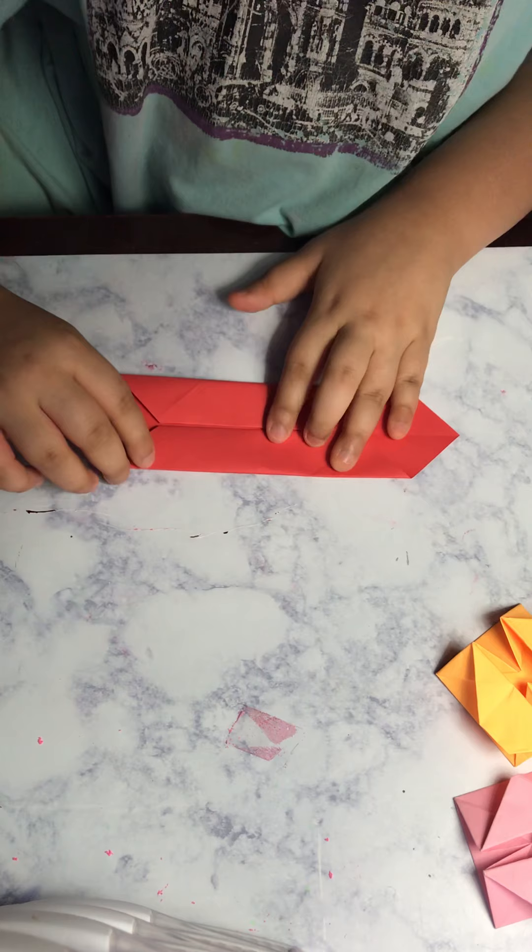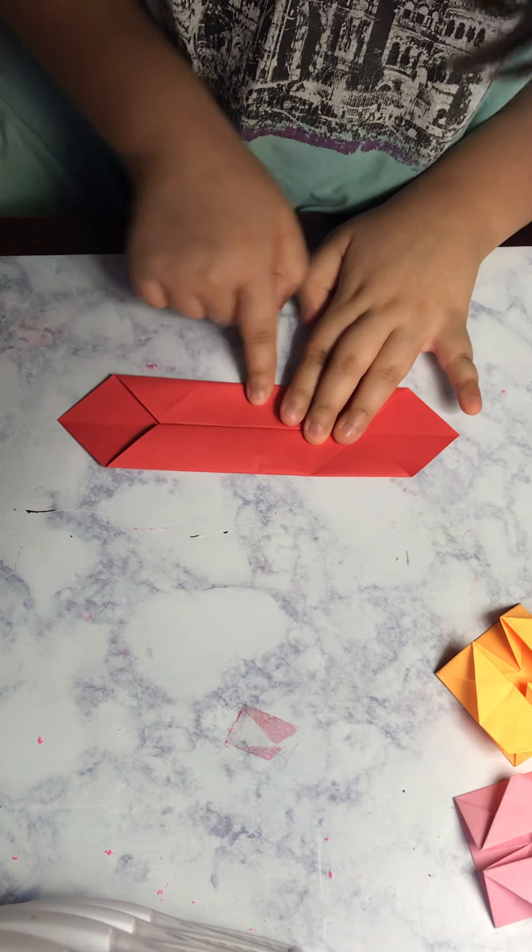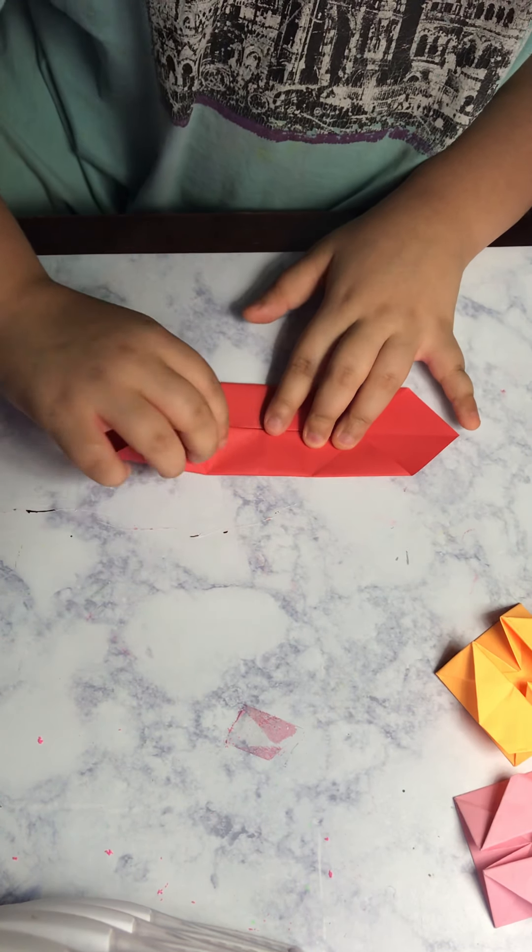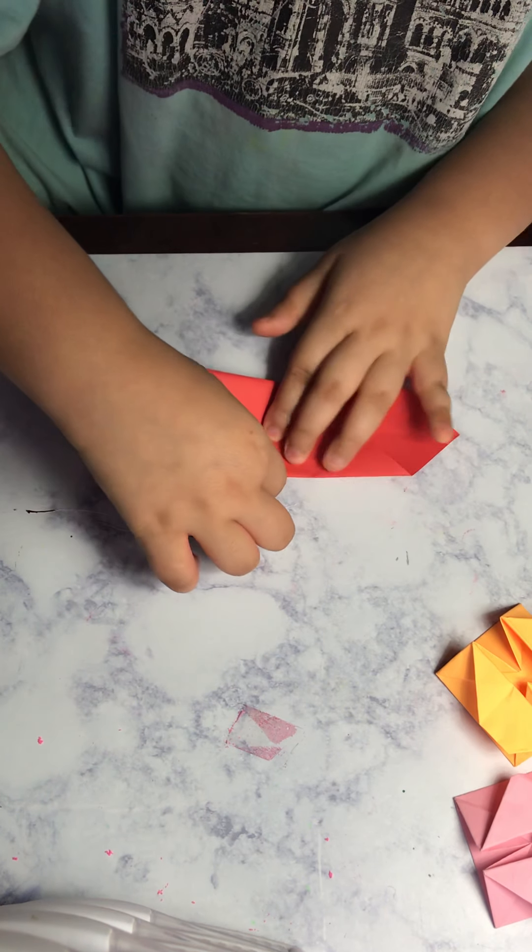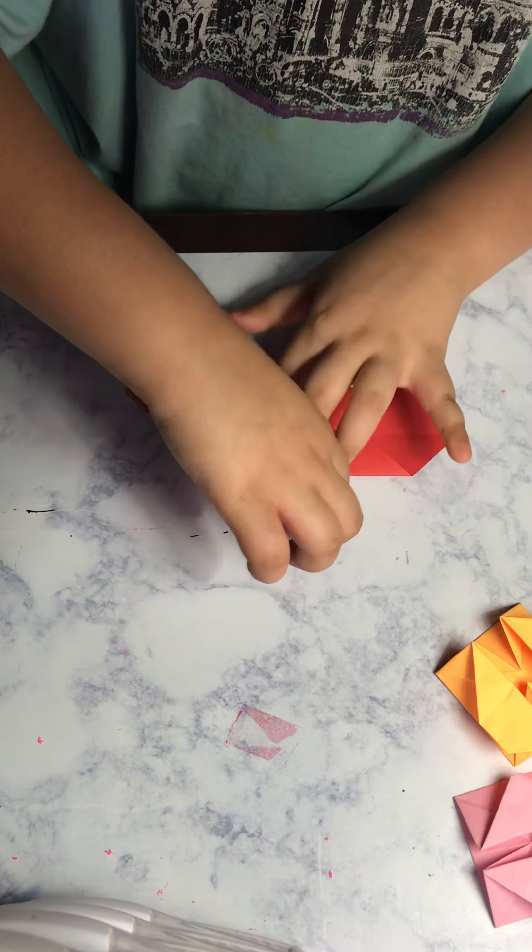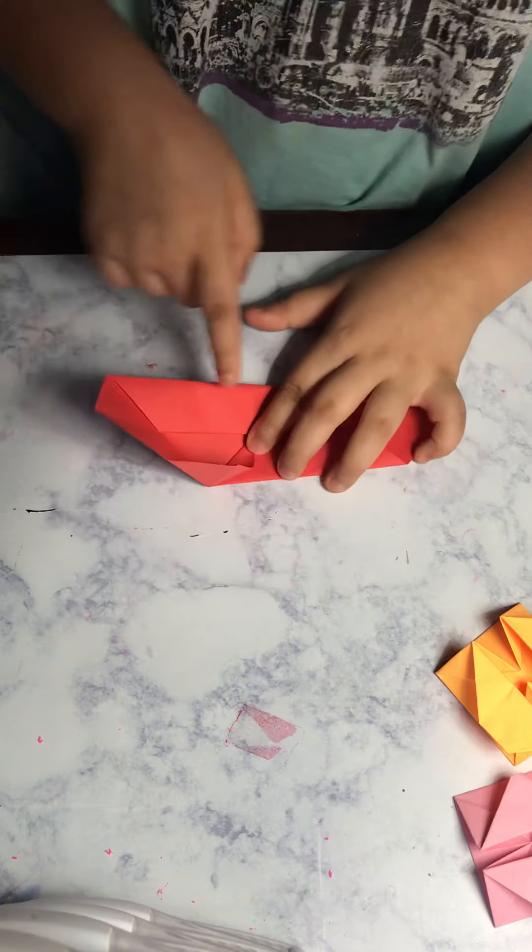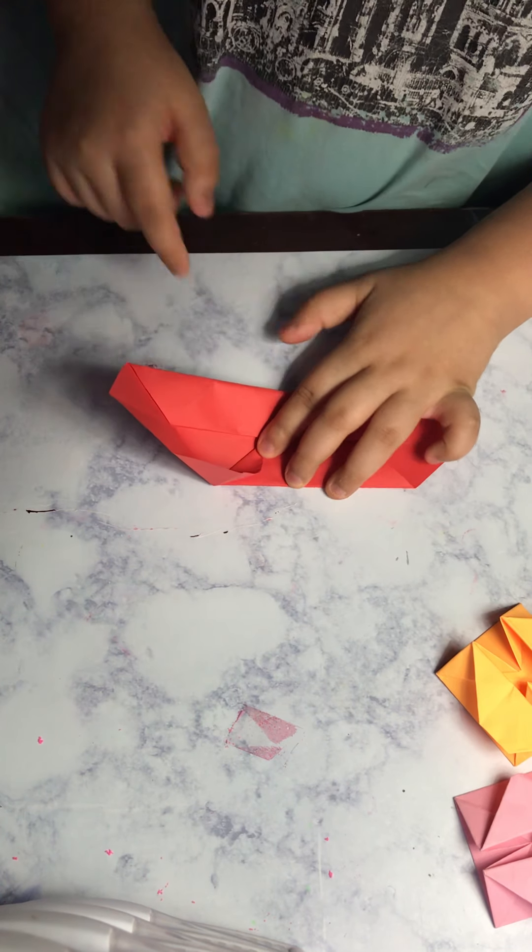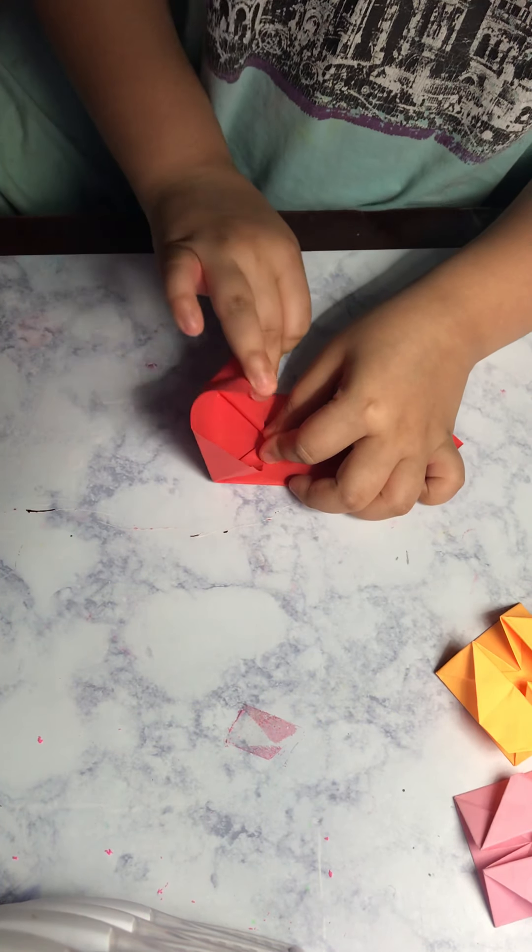And then you can take, you see this crease over here in the middle. You just take this flap, put your thumb over here or finger over here. Put it to the crease and then just fold it inside just like that. Now you do the same thing on the other side.